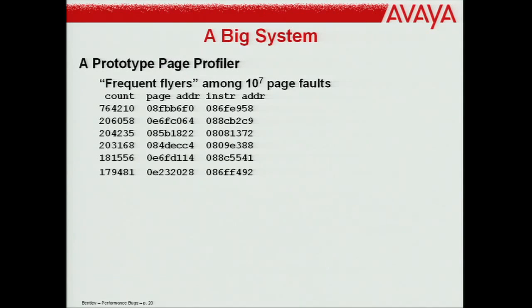I was consulting on a big system. The essence was: we had a bunch of pages passing through and I made a prototype page profiler. We counted, among 10 million page hits, what the addresses were and how often each occurred. We were surprised to find that the number-one instruction was hit far more than number two. The top item was hit 750,000 times; the second occurred 200,000 times. That bears investigating.